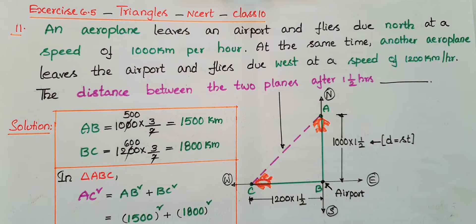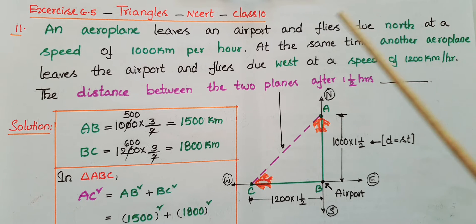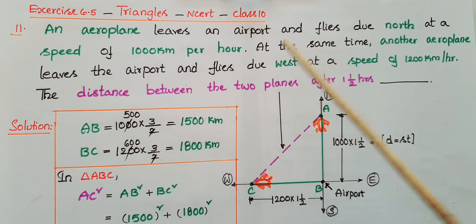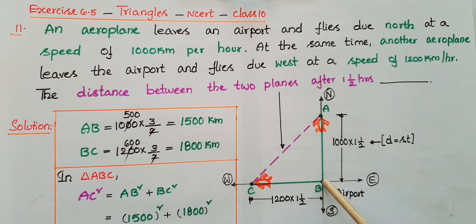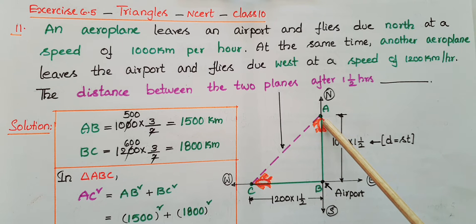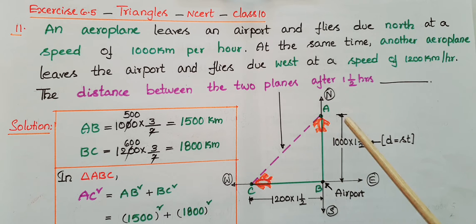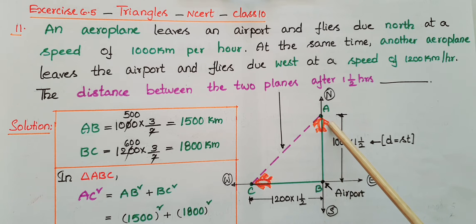If this problem comes in the form of MCQ: an aeroplane leaves an airport and flies due north at a speed of 1000 km per hour. Here, this is the north direction, this is south, east, and west. So the aeroplane starts from the airport and flies due north at 1000 km per hour, meaning in 1 hour it travels 1000 km.